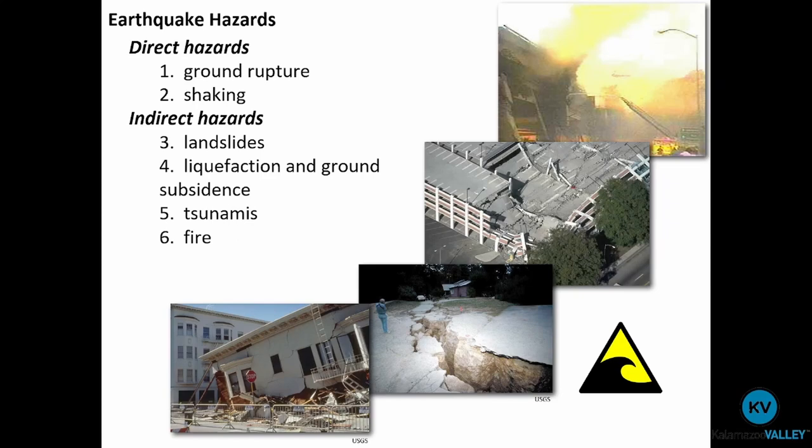There are two different categories of hazards for earthquakes: direct and indirect. Direct are the obvious ones — ground rupture, fracturing in the surface, and shaking of the ground. Everything else — the indirect hazards — are side effects of those direct hazards. As a result of ground rupture and shaking, we can have landslides, liquefaction and ground subsidence, tsunamis, fire, and so on.